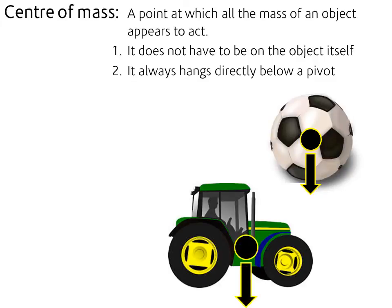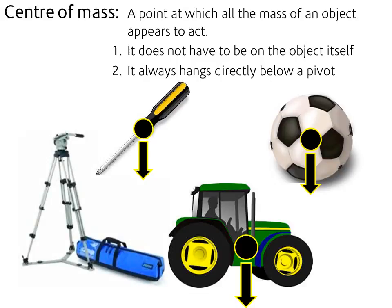Tractor, a little bit more difficult, but the centre of mass will be somewhere between those two wheels there. A little bit lower because the engine is much heavier than the cab part on top. A screwdriver, round about there. And here we have a tripod for a camera mount. Now this one is a little bit strange because the centre of mass here is not actually on the object at all.